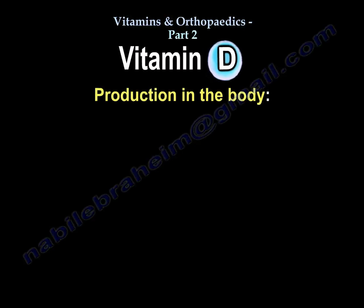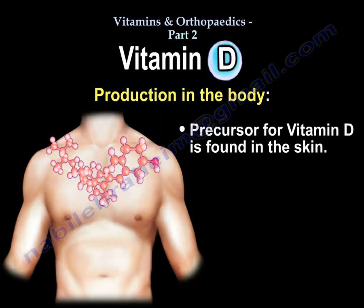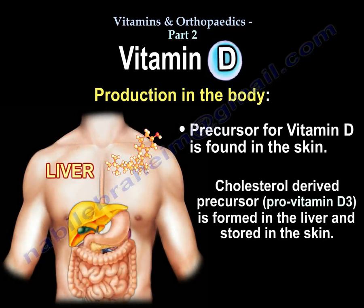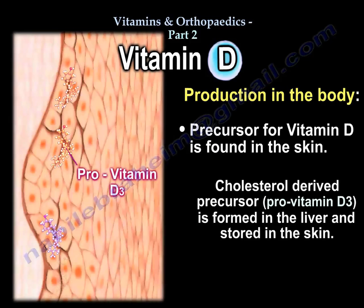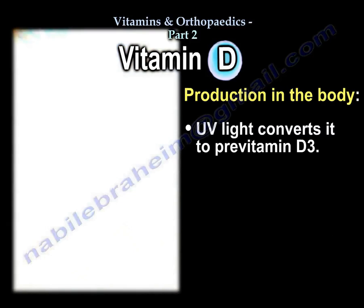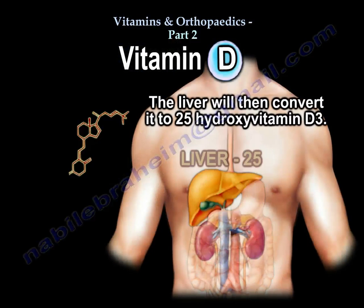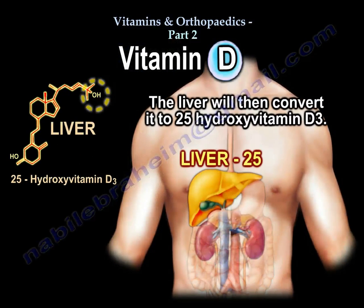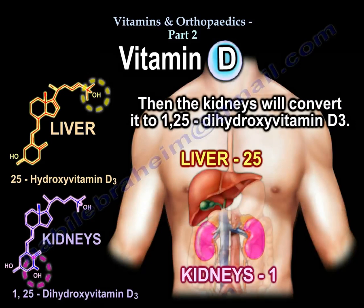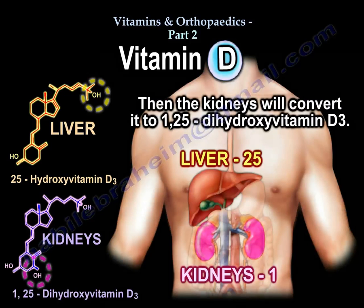Vitamin D production in the body: the precursor for vitamin D is found in the skin. UV light converts this precursor into pre-vitamin D3. The pre-vitamin D3 will then be converted in the liver to 25-hydroxy-vitamin D3. In the kidneys, it will be further converted into 1,25-dihydroxy-vitamin D3, which is the active form of vitamin D3.